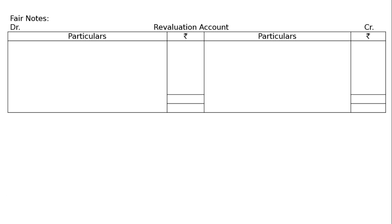Draw the proper format of a revaluation account. First entry: provision for doubtful debts, Rs. 500. Bad debts amounted to Rs. 1,500 to be written off; Rs. 1,000 was already provided, so Rs. 500 extra is needed for provision for doubtful debts. Rs. 1,500 is to be written off.